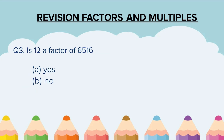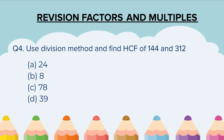Question 3. Is 12 a factor of 6,156? Options: yes or no. Question 4. Use division method and find HCF of 144 and 312. Options are 24, 8, 78 and 39.